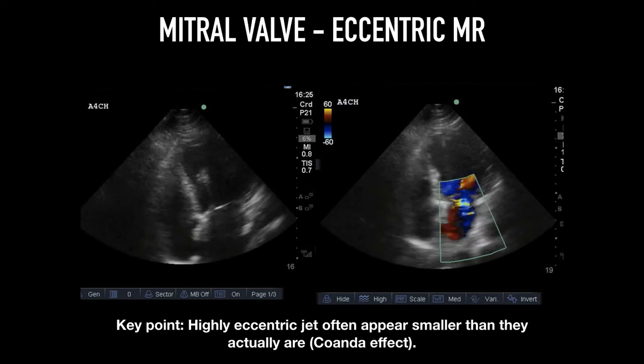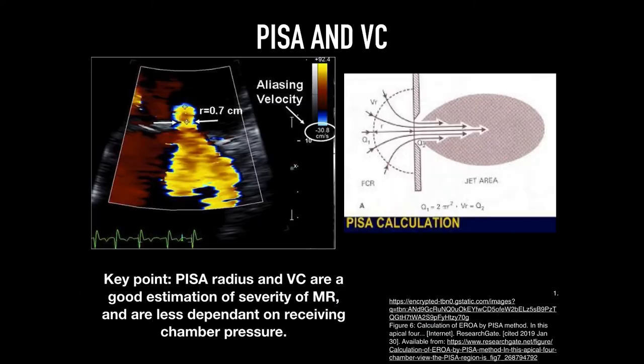All the previous markers show pitfalls of color assessment, mainly due to the receiving chamber characteristics. PISA and vena contracta are two markers that are less pressure dependent but technically more challenging.